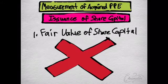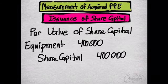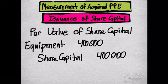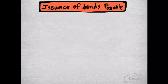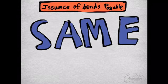What if the fair value of the share capital is also not available? Then we would go to our last resort, which is par value of share capital. We would debit equipment and credit share capital for the same amount of 400,000. Notice that there's no share premium because we are using the par value of the share capital.